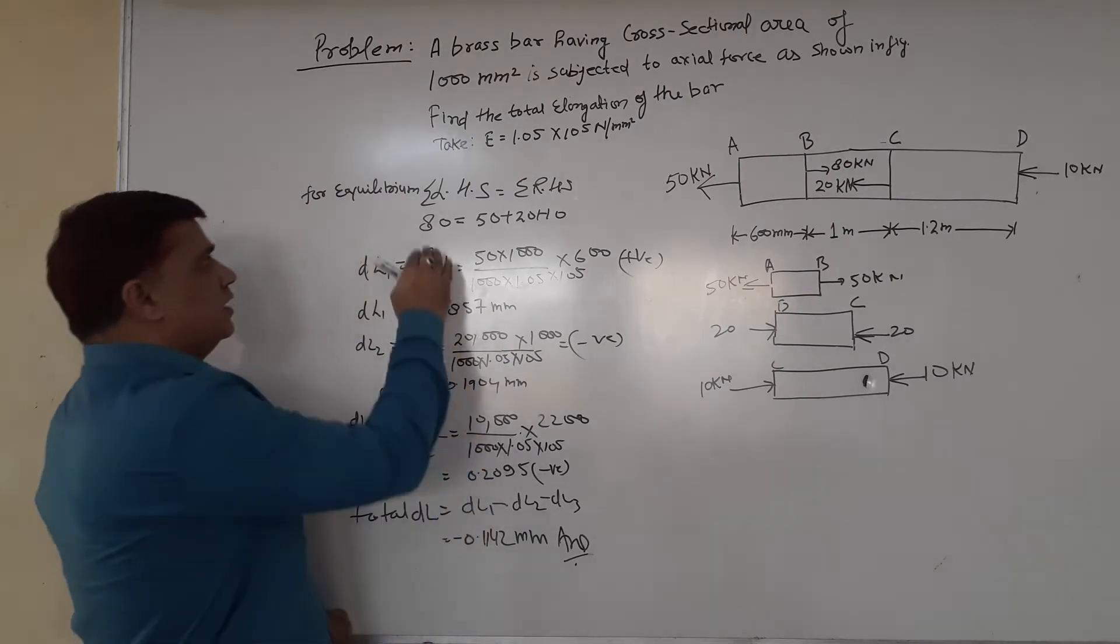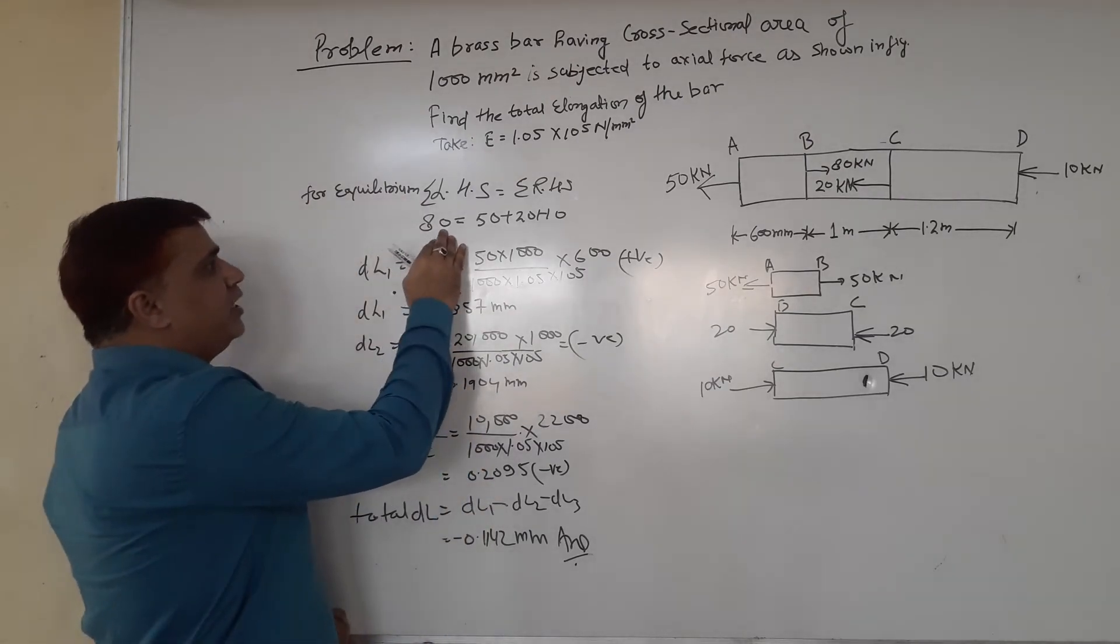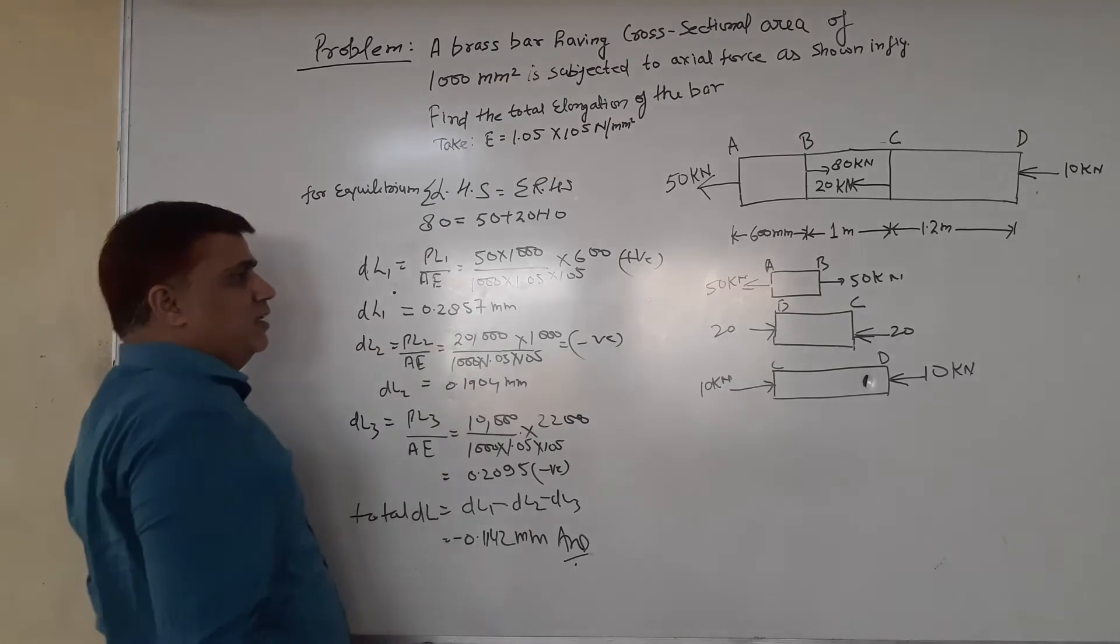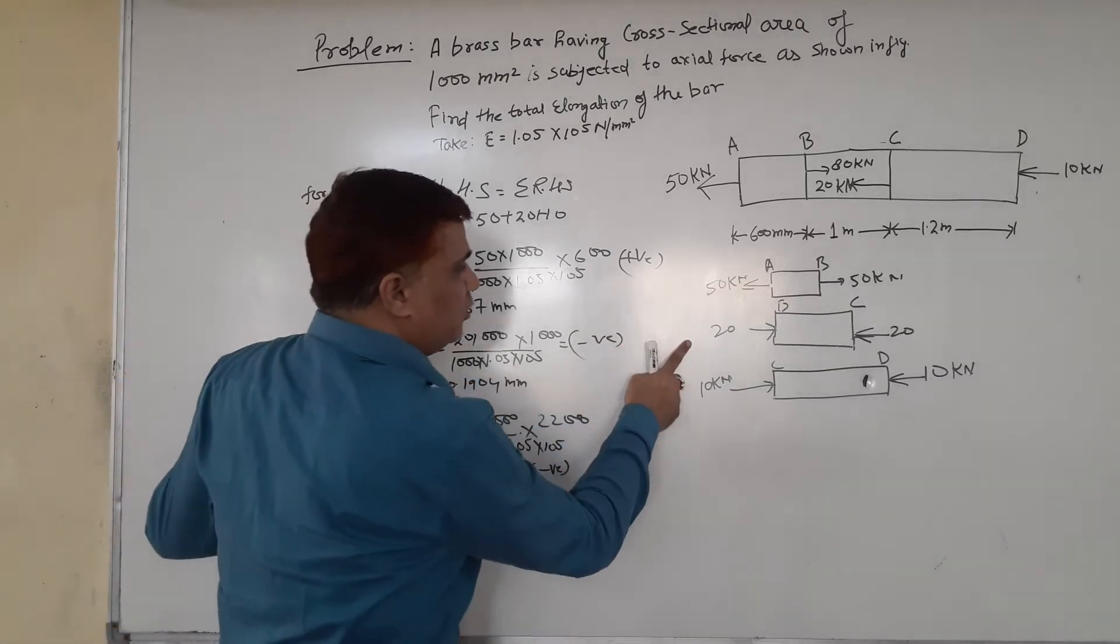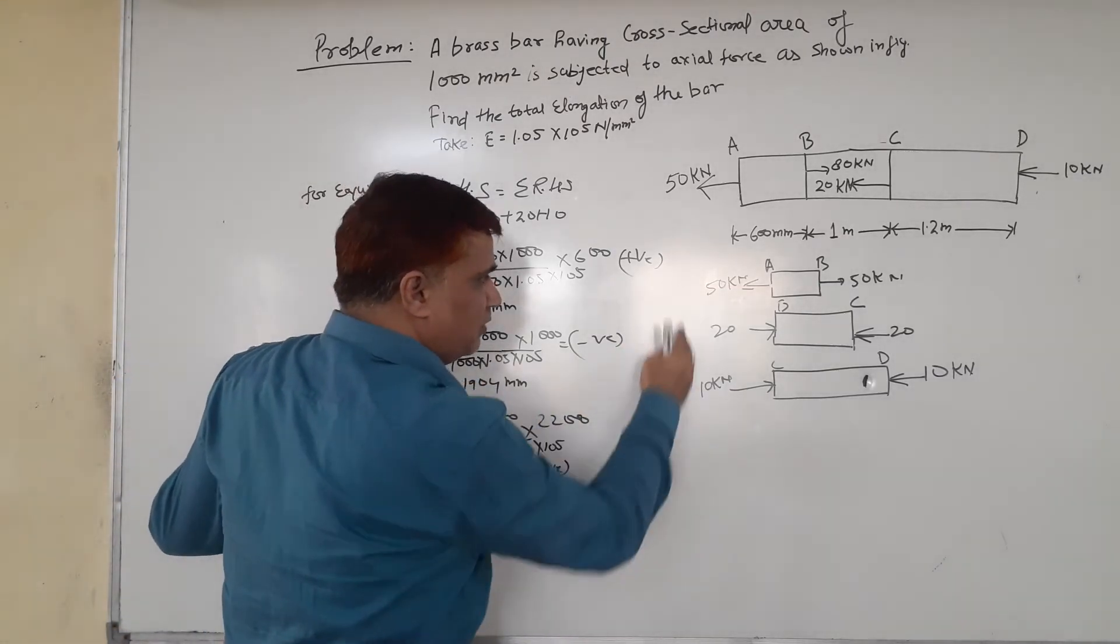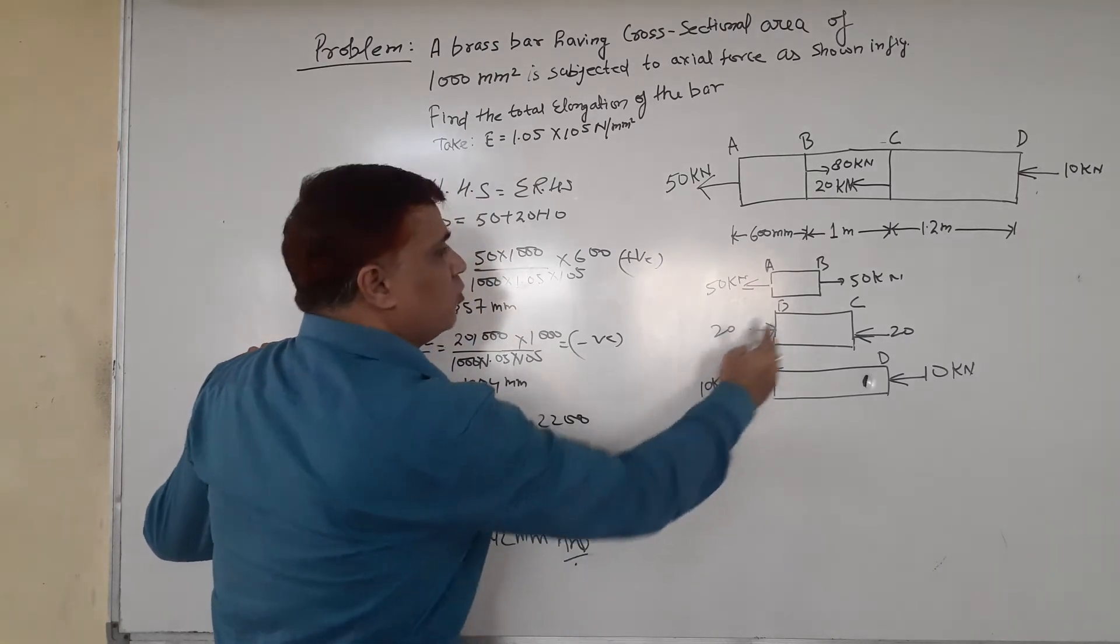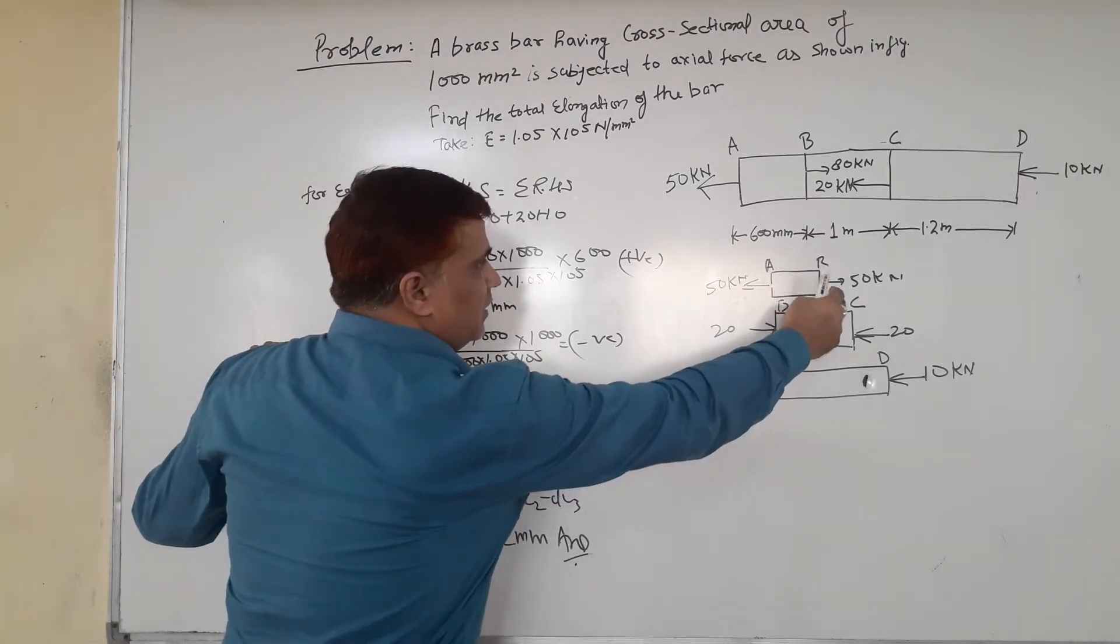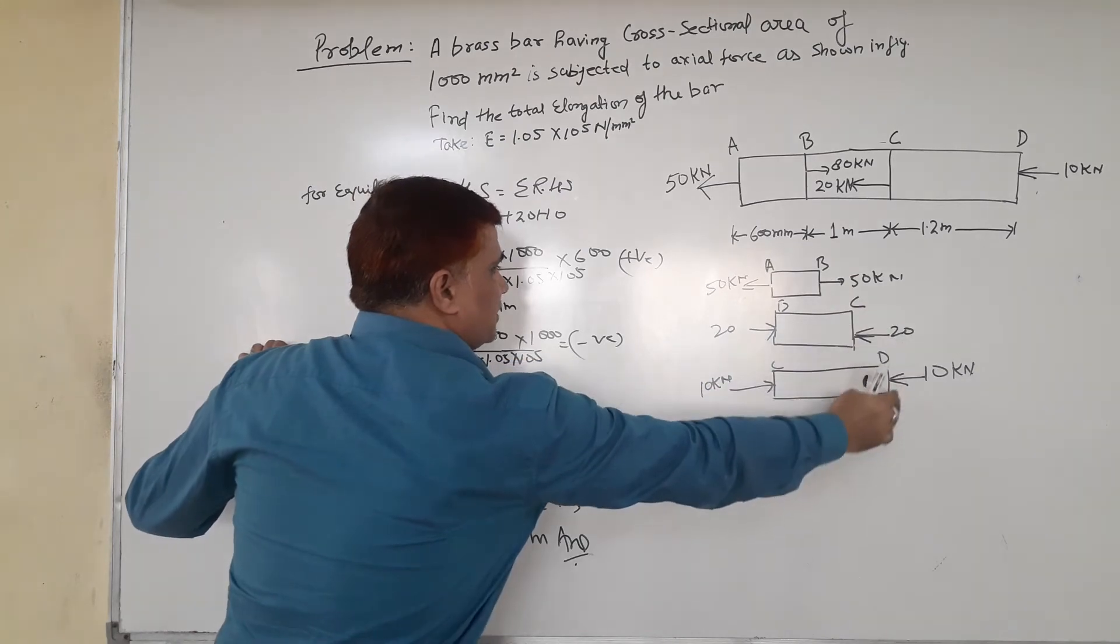For equilibrium, we apply the summation: 50 kN + 20 kN + 10 kN on the left-hand side equals 80. On the right-hand side: 50 + 20 + 5.